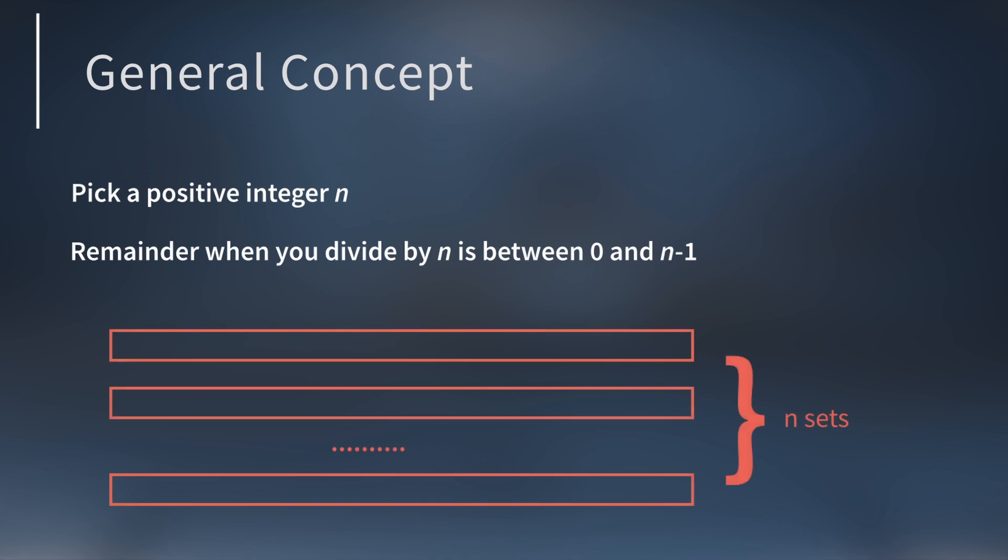We can partition the whole numbers into N sets based on the remainders. Above we called these remainder sets, but in number theory you call them congruence classes. Like before you can add, subtract, and multiply two numbers from congruence classes and the result will always be in the same class.